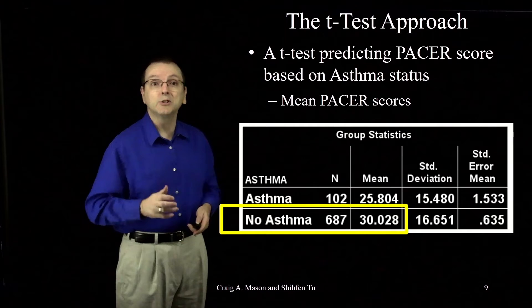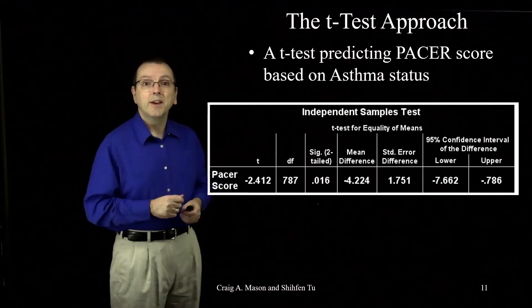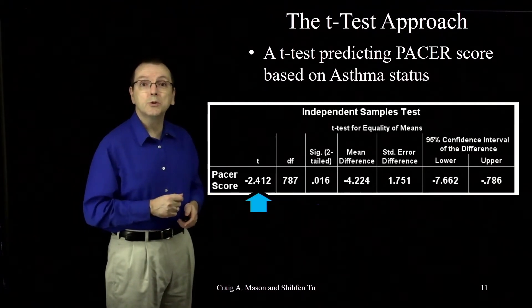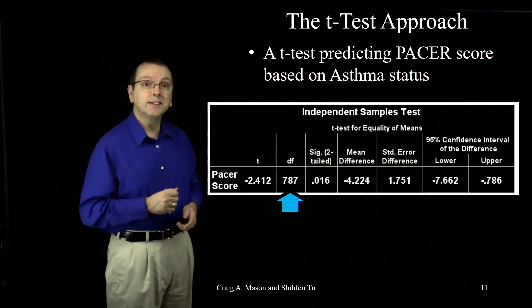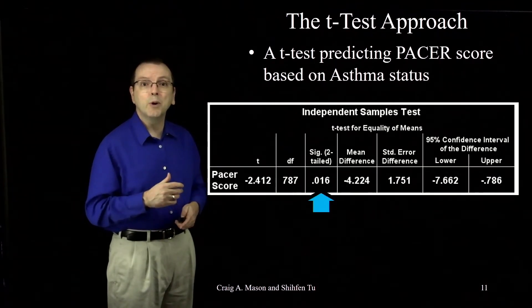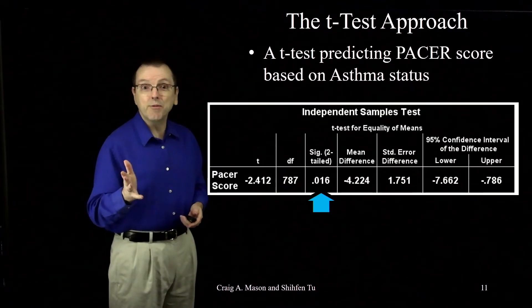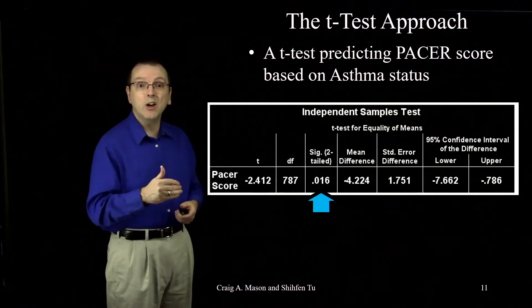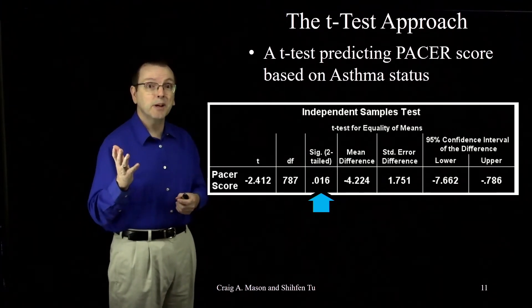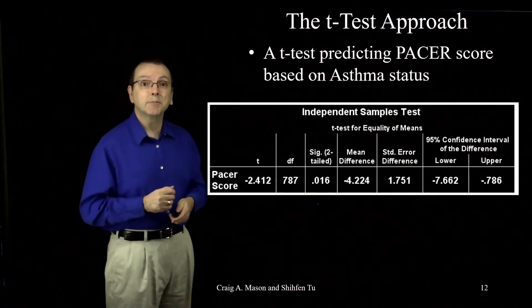Now let's look at the results for our t-test. Okay, here's the output. And sure enough, we have a t of negative 2.412 with 787 degrees of freedom that gives us a p-value of 0.016. That's less than 0.05. So we reject the null that the mean of the population of students with asthma is the same as the mean of the population of students without asthma.